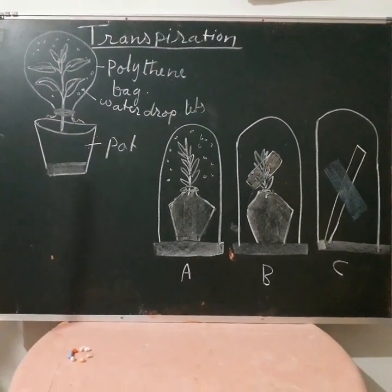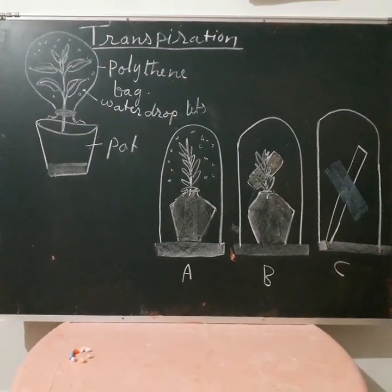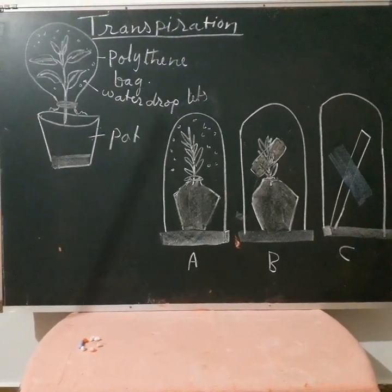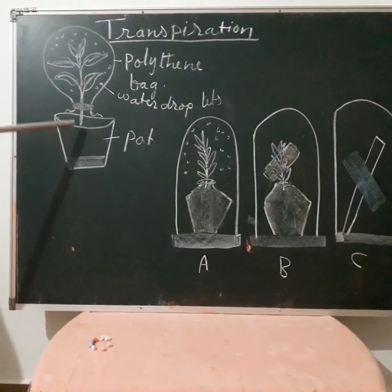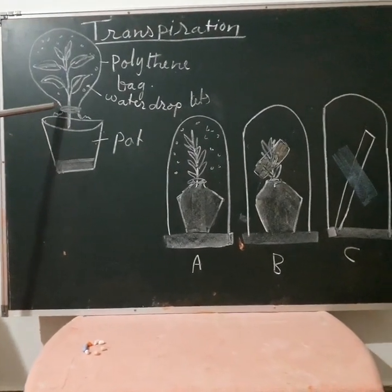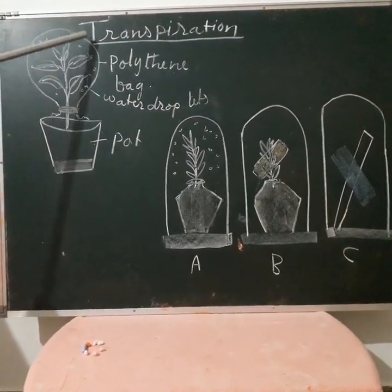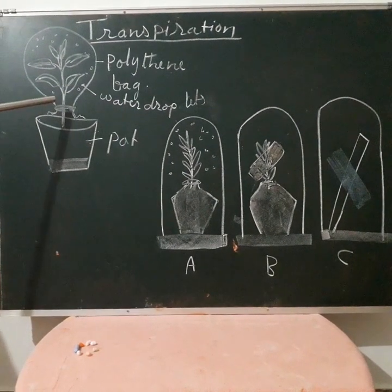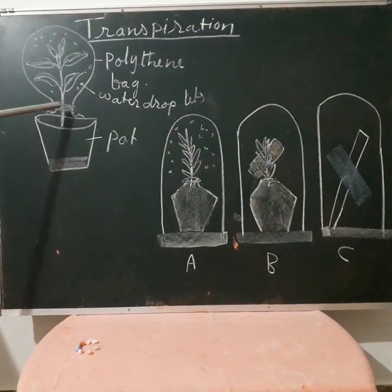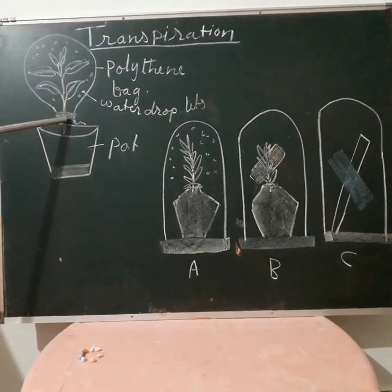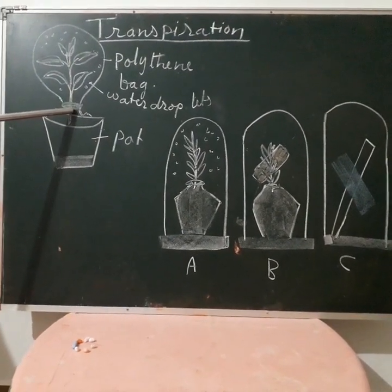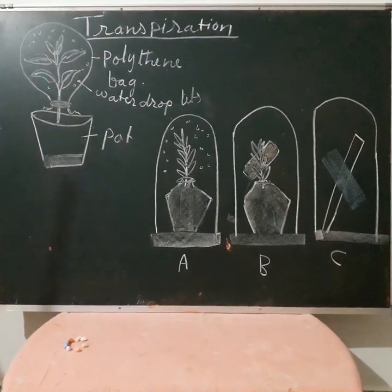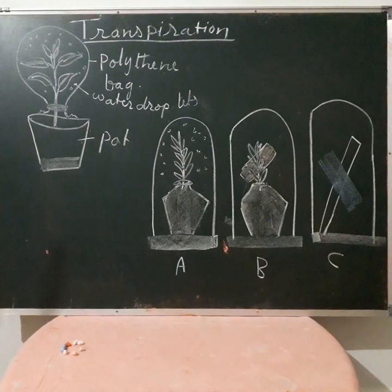To demonstrate this, we will do an experiment. A well-watered potted plant is taken and covered with a polythene bag, with its mouth tied at the base of the stem. The whole setup is left in the sunlight for one to two hours.